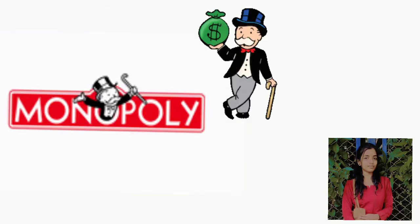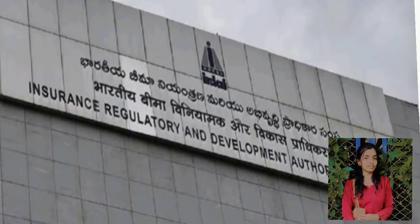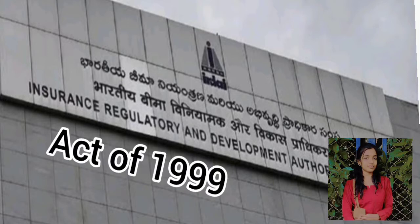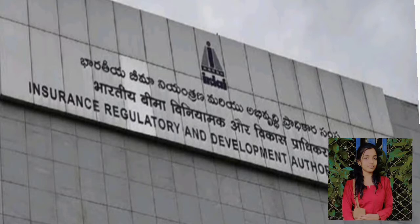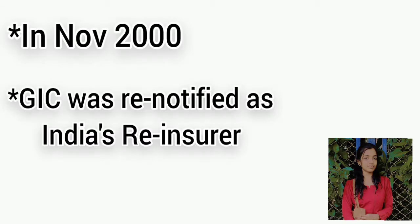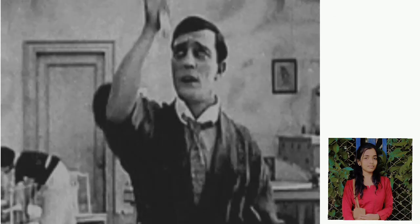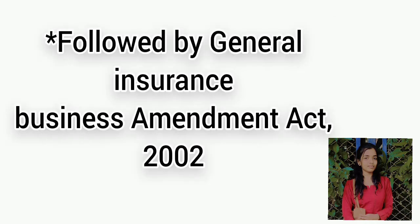GIC and its subsidiaries had a monopoly on general insurance business in India until the Insurance Regulatory and Development Authority, that is IRDA, Act of 1999, which came into effect on April 19, 2000. In November 2000, GIC was re-notified as India's reinsurer and its supervisory role over its subsidiaries ended. This was followed by the General Insurance Business Amendment Act 2002.